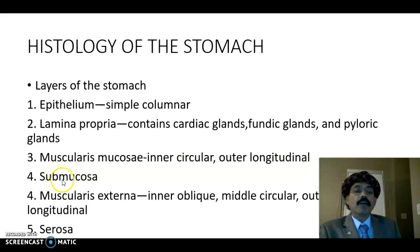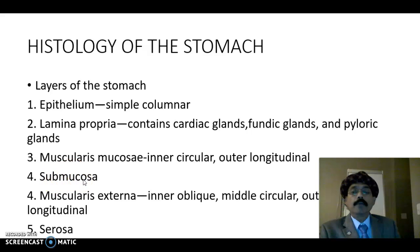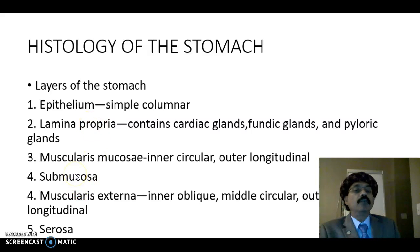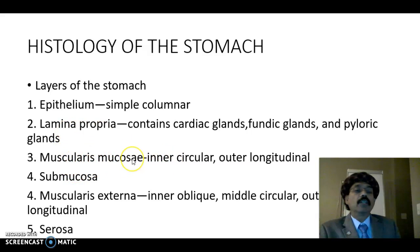The submucosa lies underneath the muscularis mucosa. The lamina propria is a loose connective tissue, whereas the submucosa is a dense connective tissue, and the muscularis mucosa is smooth muscle.